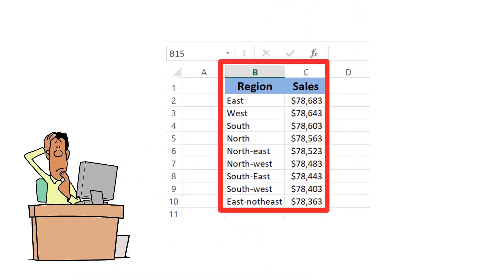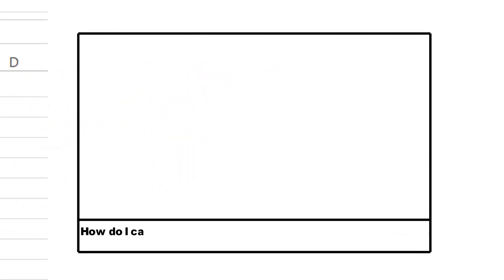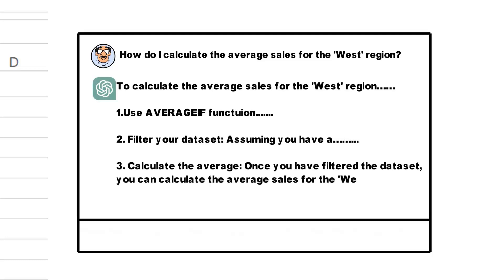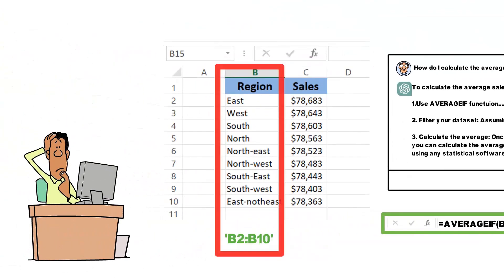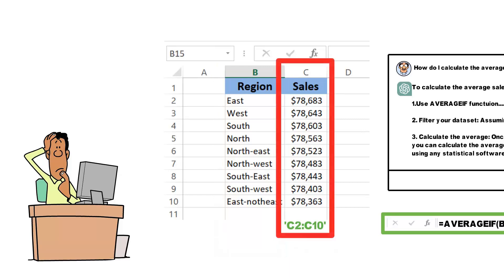In terms of complex questions, suppose you have a data set of sales by region and want to find the average sales but only for the West region. You might ask, how do I calculate the average sales for the West region? ChatGPT would then guide you to use the AverageIf function in Excel, which would look like: equals AverageIf B2 colon B10, West, C2 colon C10. Assuming B2 to B10 contains the regions and C2 to C10 contains the sales data.